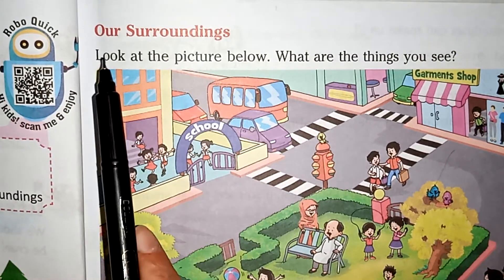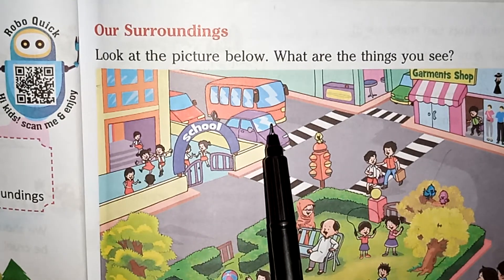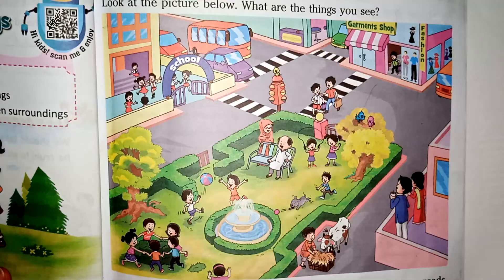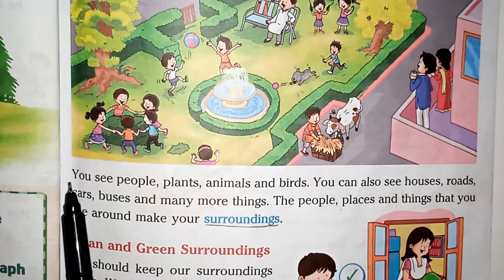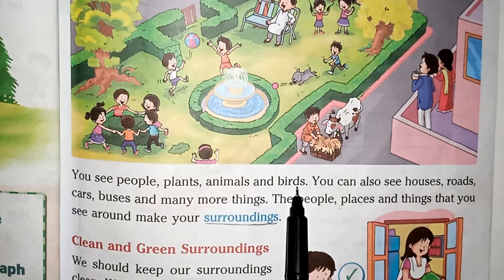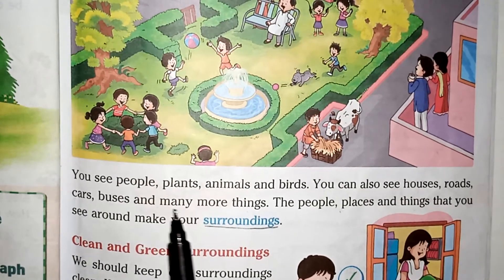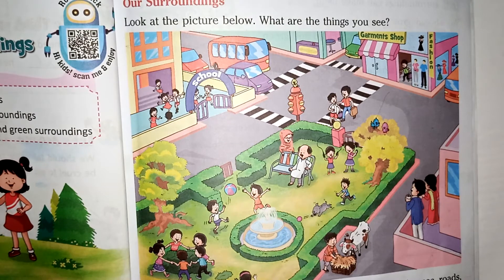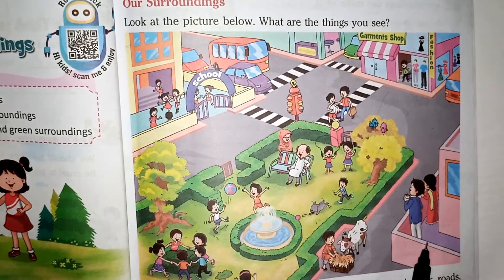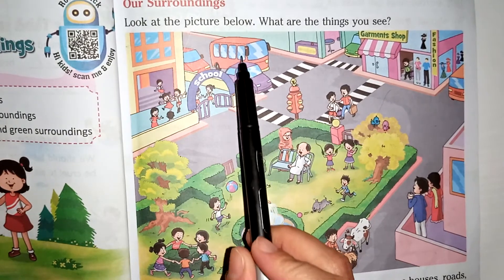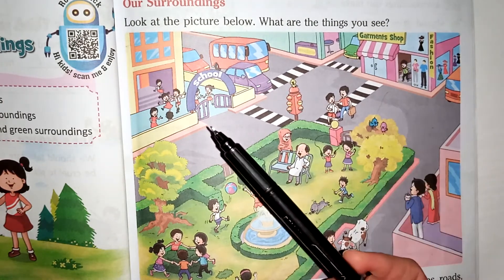The next topic is our surroundings. Look at the picture below. What are the things you see? Look, here is a picture — this is our surrounding. You see people, plants, animals, and birds. You can also see houses, roads, cars, buses, and many more things like signals, benches, garment shops, and school.